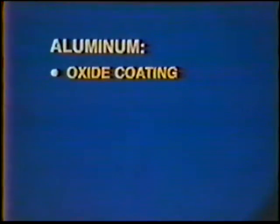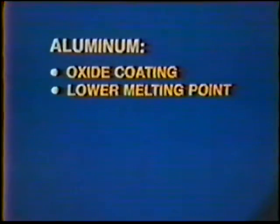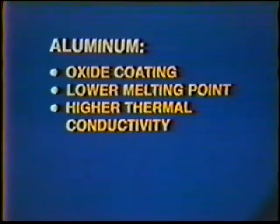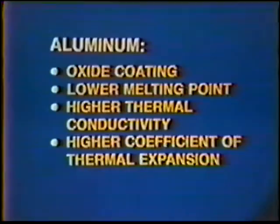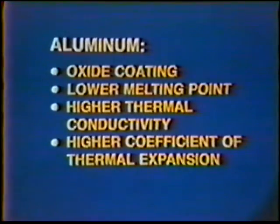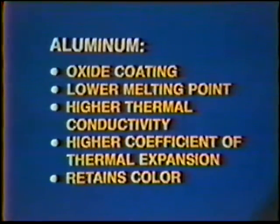To summarize the differences between carbon steel and aluminum: aluminum has an oxide coating, a lower melting point, higher thermal conductivity, a higher coefficient of thermal expansion, and does not change color at its melting point.